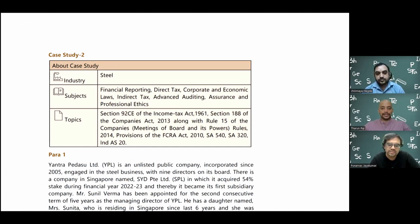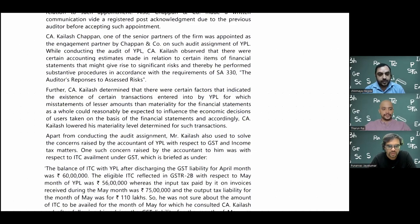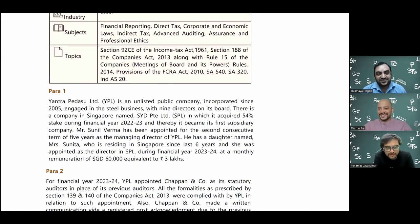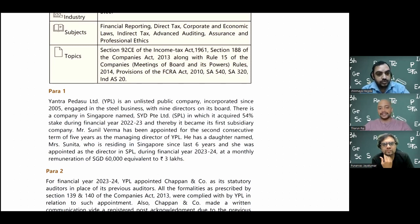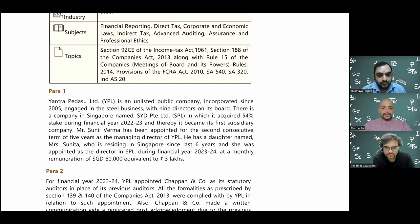There are five paragraphs and based on these five paragraphs there are questions. Paragraph one: Yantra Pedasu Limited is an unlisted public company incorporated since 2005, engaged in the steel business with nine directors on its board. There is a company in Singapore named SYD Pte Limited in which it acquired 54 percent stake during the financial year 2022-23, making it the first subsidiary company.